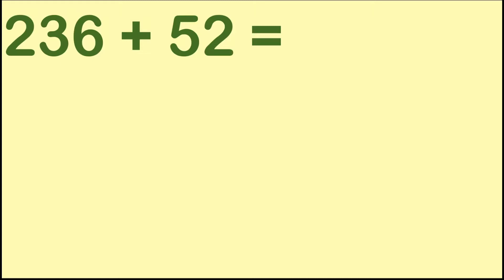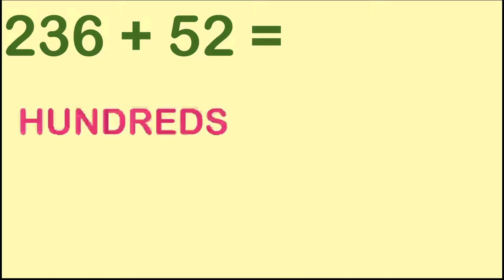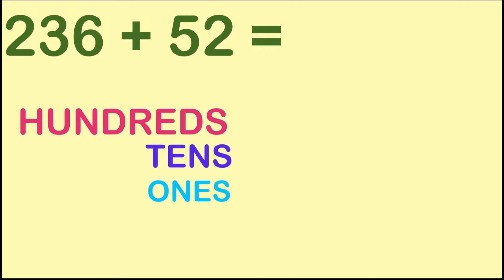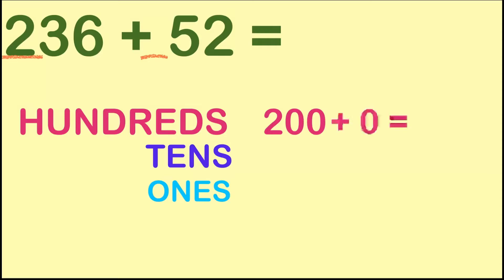Since we have a three-digit number, 236, we will have the hundreds, tens, and ones. Let's start at the hundreds. We have digit 2 on the first number, and its value is 200. Since we don't have a digit at the hundreds place on the second number, we will have plus zero. So if we add them together, 200 and zero, that is equal to 200.